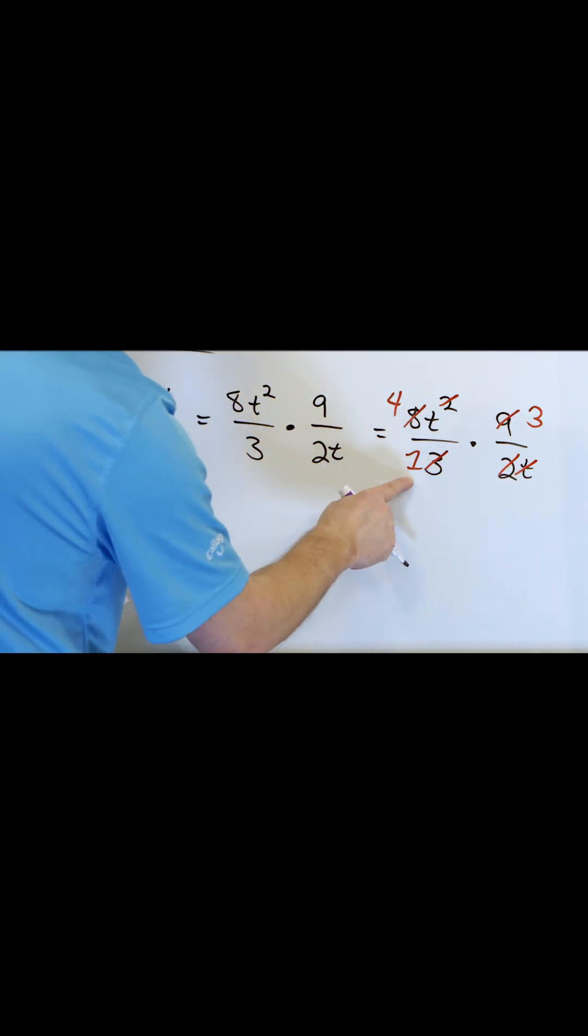On the bottom we'll have 1 times—there's nothing left here, so it's just going to be 1. So you can just write it as 12t.